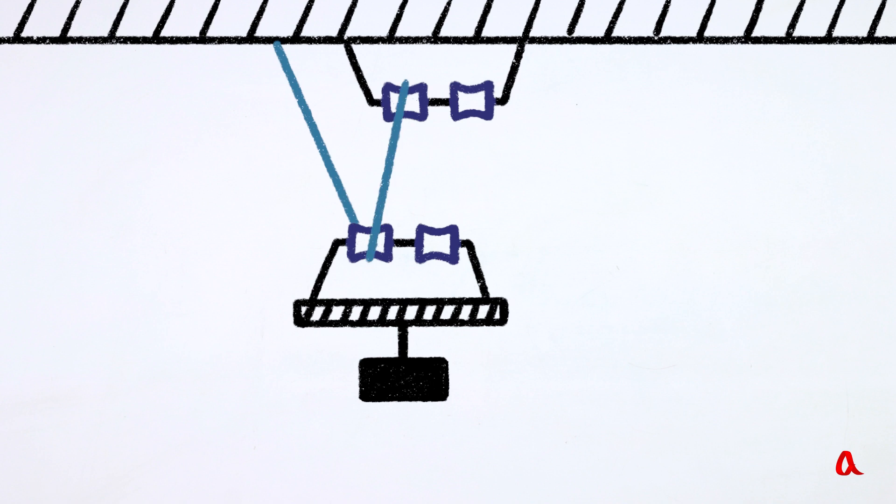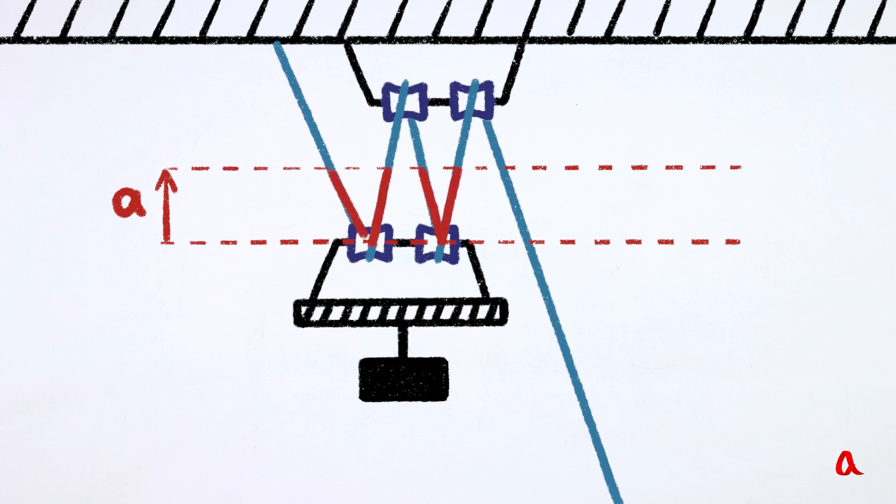In this block and tackle construction, the mechanical advantage equals four. Let us now demonstrate that the distance loss also equals four. To raise the load to distance A, we have to select four stretches of a rope with length A each. A 4A length rope is pulled up over the fixed block and a hand covers the distance of 4A, thus making the distance loss equal four.